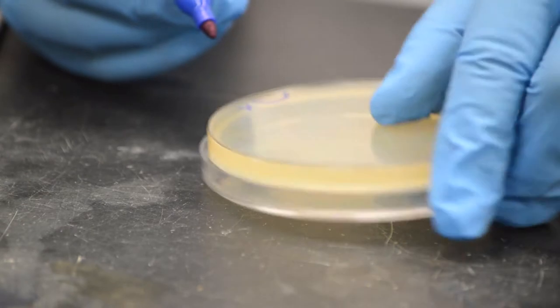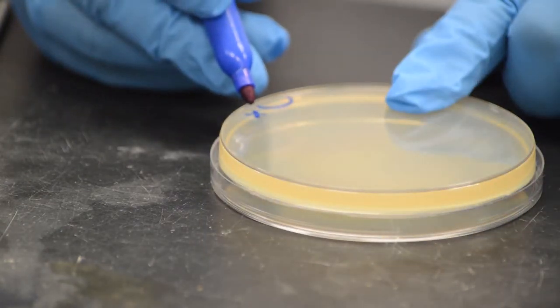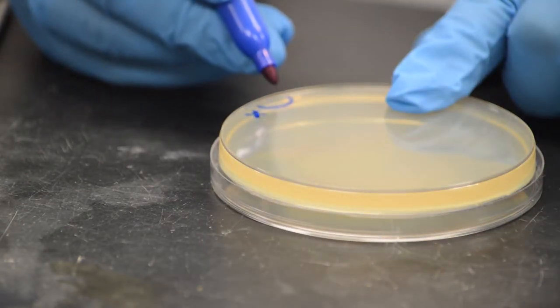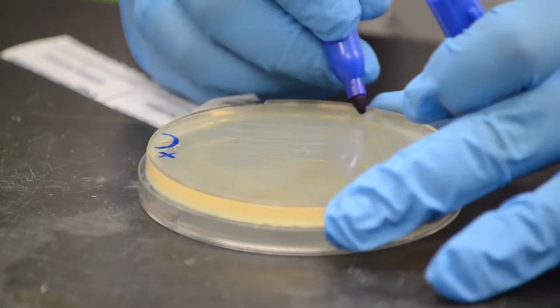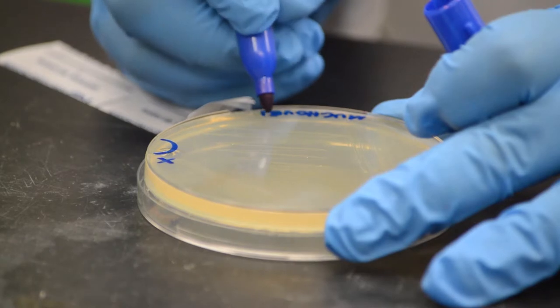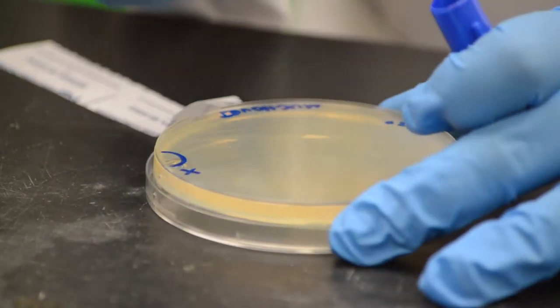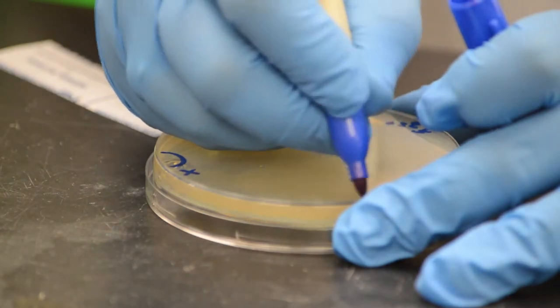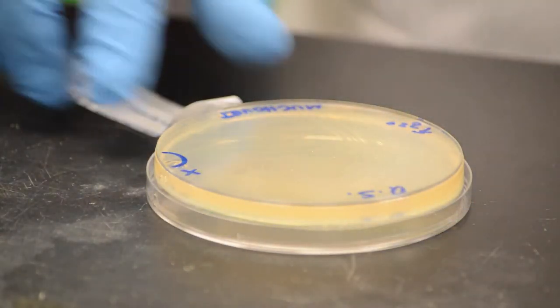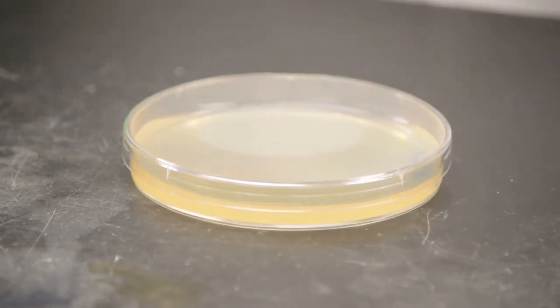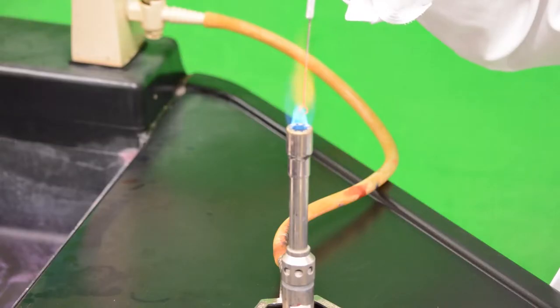First, label the petri plate provided by marking the bottom of the plate with an X to indicate the place where you want to start your set of streaks. Also label information such as the date, your name or initials, your lab section, and source of bacteria being used. Place the petri plate topside up on the table.